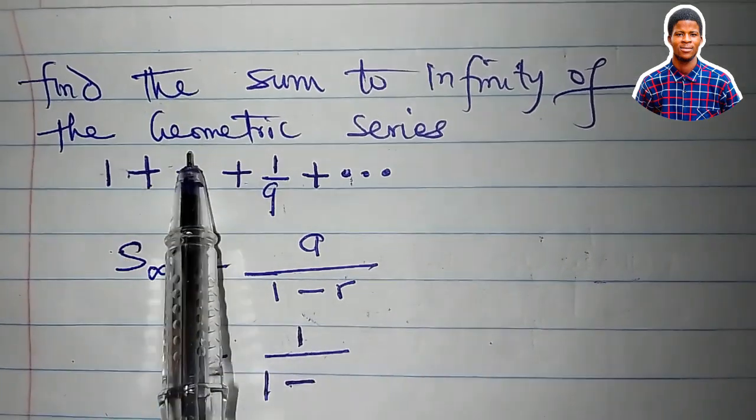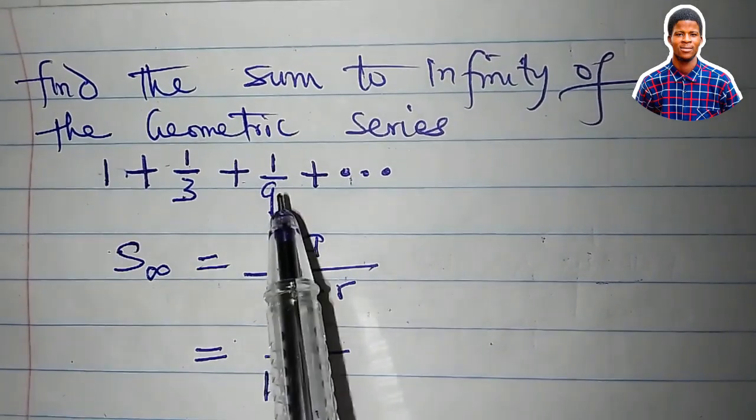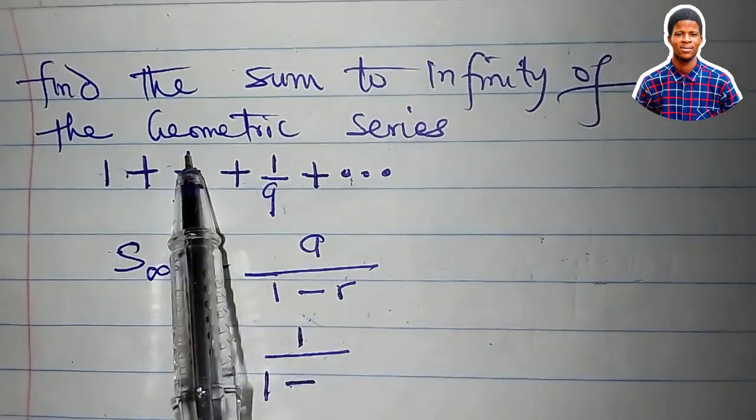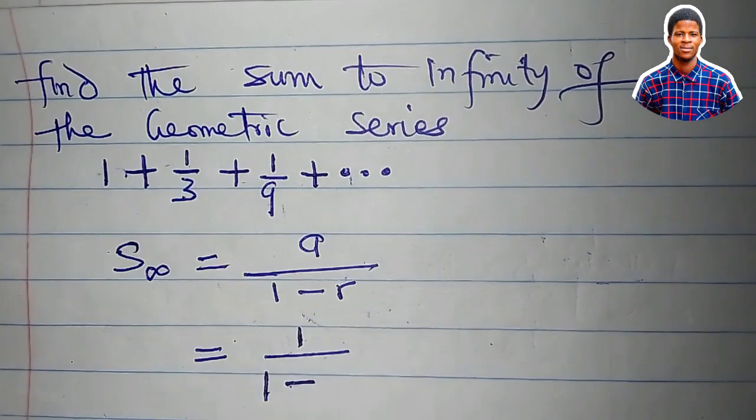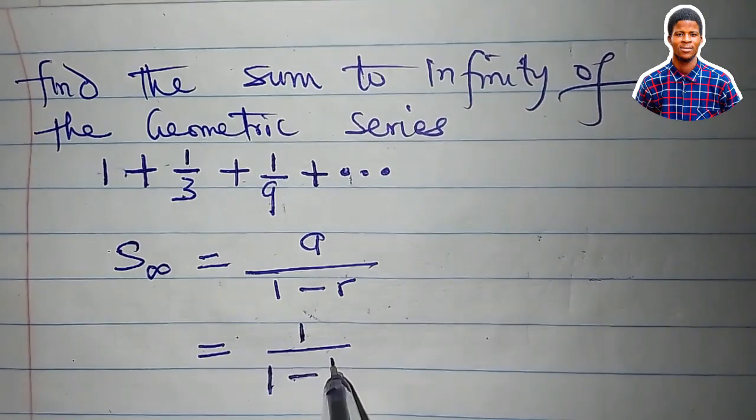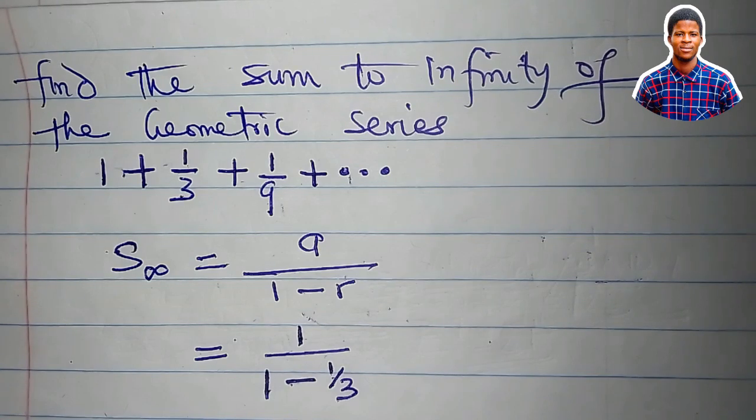The common ratio is second term divided by first term. 1 over 3 divided by 1 is 1 over 3. 1 over 9 divided by 1 over 3 is still 1 over 3. So the common ratio is 1 over 3. Let's simplify this now.